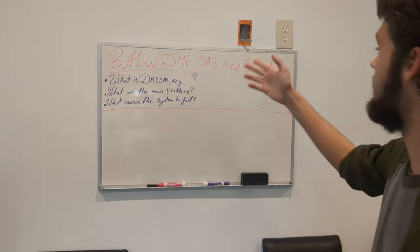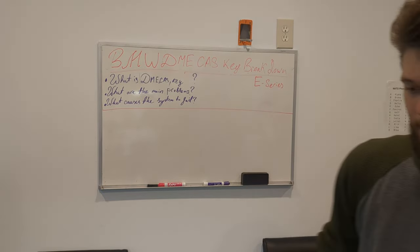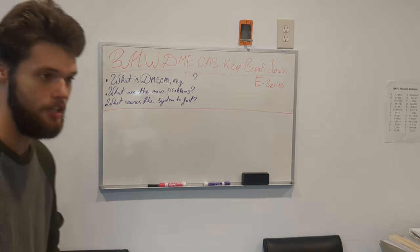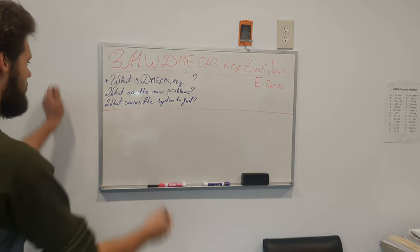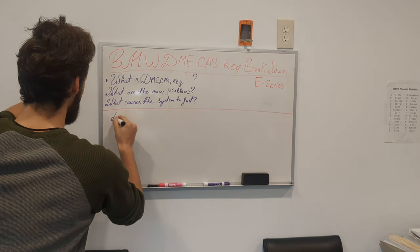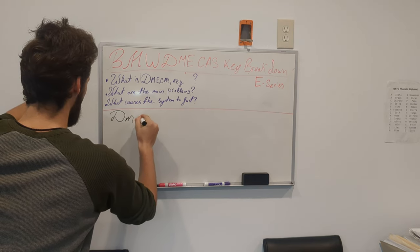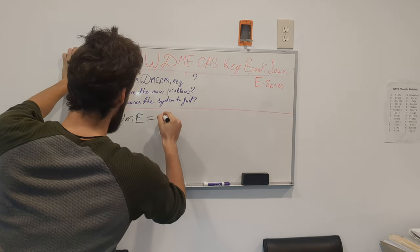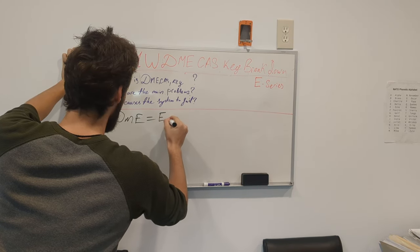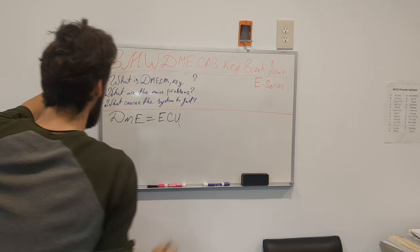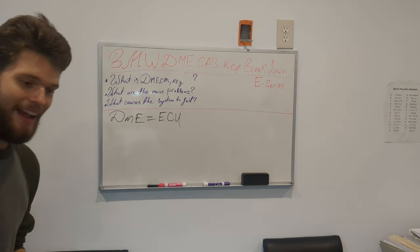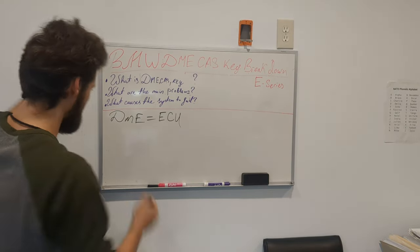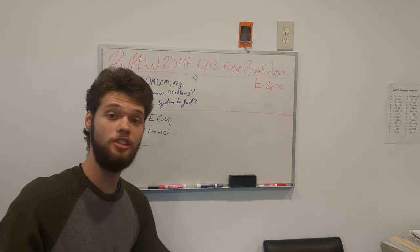So, we'll start off with the DME. DME in BMW is the same thing as the ECU in any other car. So if the DME is the same as ECU, the CAS in BMW is the immobilizer, and then key is just the key.